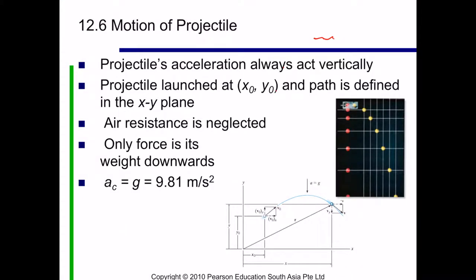Welcome to topic 12.6, motion of projectile. Motion of projectile is basically a study of a free flight motion and often studied in terms of its rectangular components. In order to illustrate the kinematic analysis, we consider a projectile launched at point X0 and Y0 with initial velocity V0, having components V0X and V0Y. We consider air resistance to be neglected. Therefore, the only force acting on the projectile is the weight downwards, causing a constant downward acceleration, AC or G, equal to 9.81 meters per second squared.